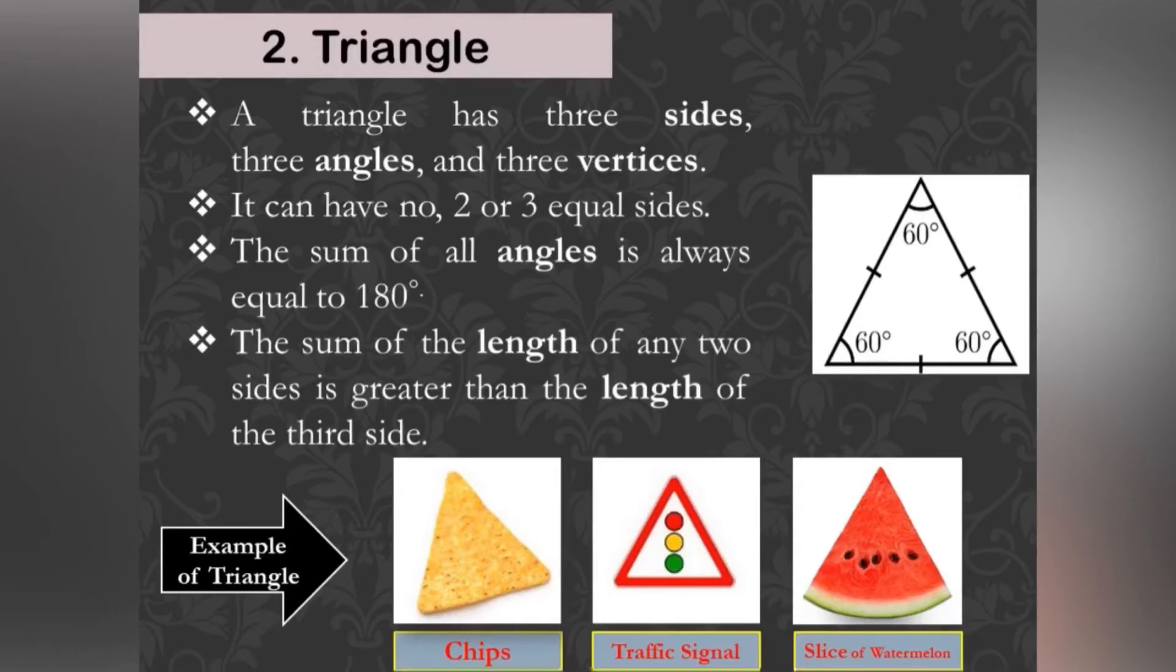The sum of all internal angles of a triangle is always equal to 180 degrees. The sum of the length of any two sides of a triangle is greater than the length of the third side.